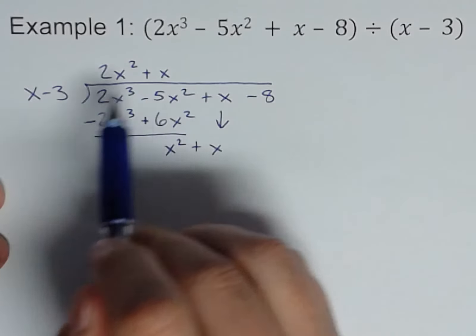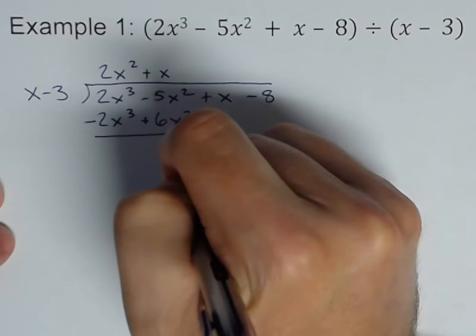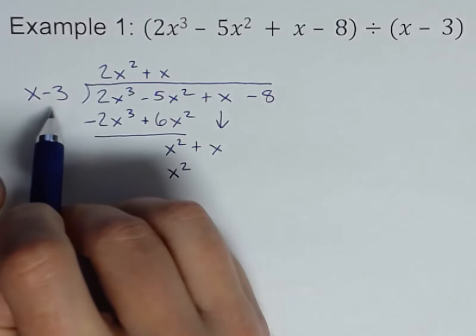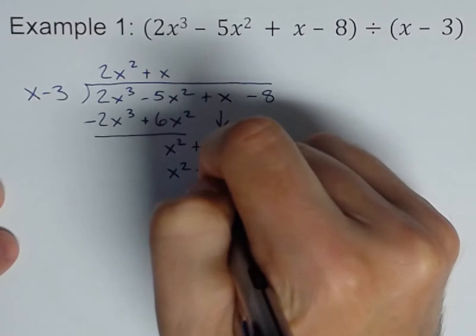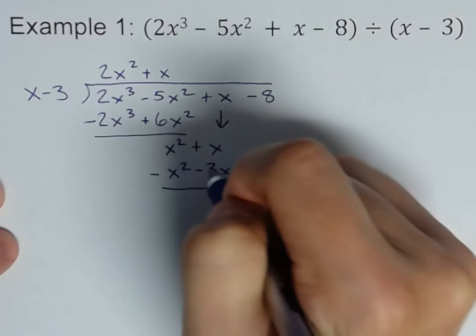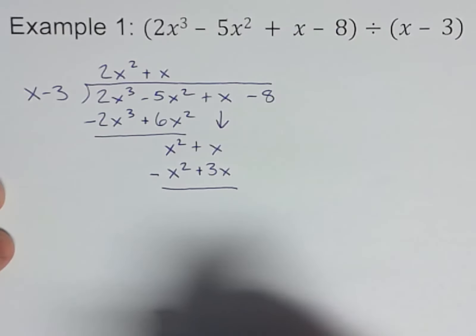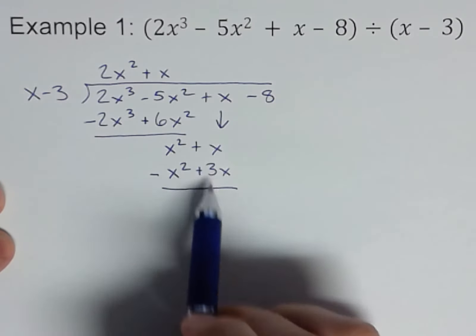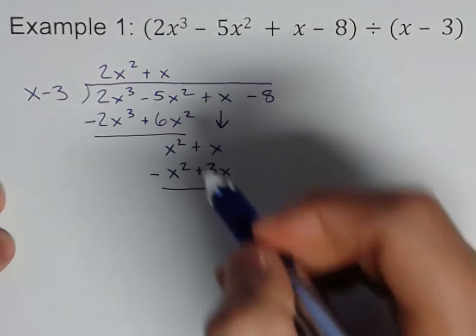So now we're going to multiply x through x minus 3. x times x is x², and x times -3 is -3x. And subtract again. I go through and change all those signs. I would encourage you to do that. It's easy to write a minus here and forget that one's changed.